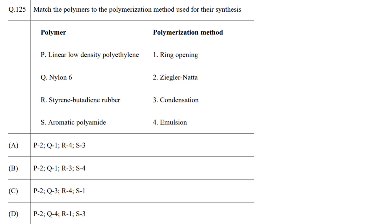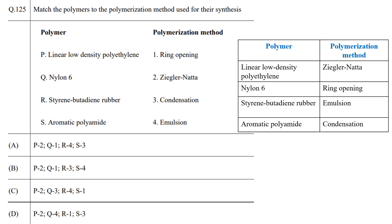The next question is to match the polymer with their synthesis method. Free radical polymerization of ethylene gives branched polyethylene; to achieve minimum branching, Ziegler-Natta polymerization is used. Nylon-6 is prepared by ring opening polymerization of caprolactam. Styrene butadiene rubber is synthesized by emulsion polymerization, which is a type of radical polymerization. Reaction of an acid with an amine gives an amide, so polyamides are synthesized by condensation polymerization — an example being Kevlar fiber, an aromatic polyamide. The correct answer is option A.